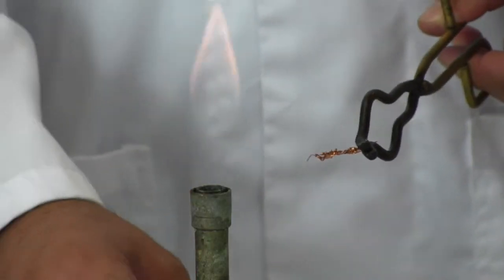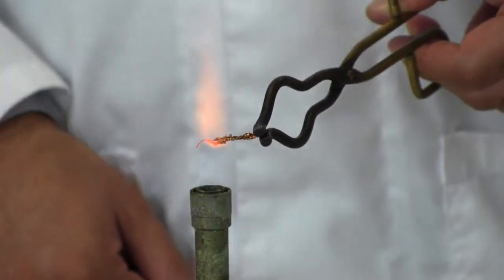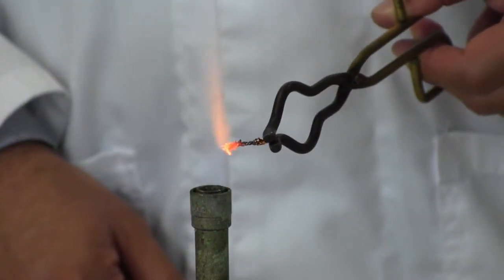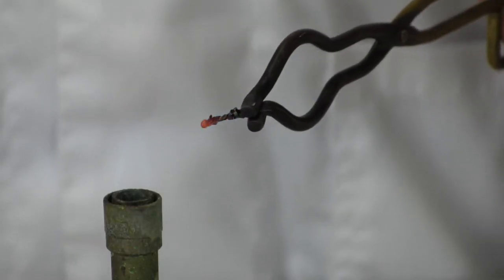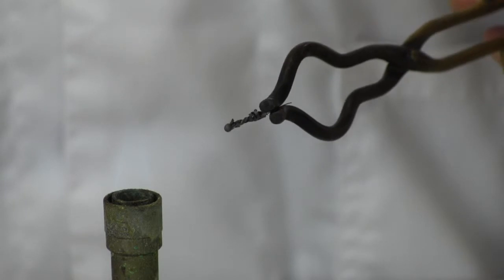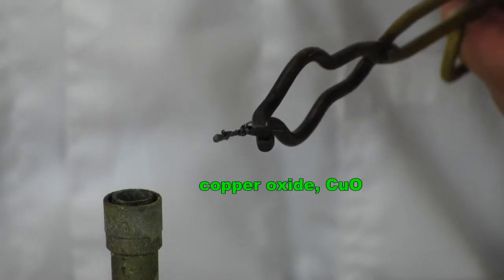If I take a small amount of copper and heat it really strongly, it slowly turns black. The copper chemically combines with the oxygen in the air to produce the black substance which we now call copper oxide, CuO.